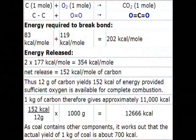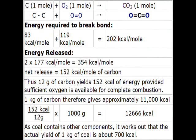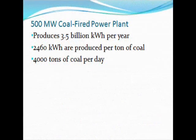Most of the carbon in coal is bound so that there is only one carbon-carbon bond for every carbon atom. For calculating the energy release of carbon and oxygen producing carbon dioxide in the case of coal, it is assumed that only one carbon-carbon bond is broken. After taking into account the energy required to break the bond and energy released, the net energy released per mole of carbon is about 152 kilocalories. Since there are other components in coal, the actual yield of one kilogram of coal is about 700 kilocalories. A typical 500 megawatt power plant produces about 3.5 billion kilowatt-hours per year, and since about 2,460 kilowatt-hours are produced per ton of coal, a power plant of this size would go through about 4,000 tons of coal per day.